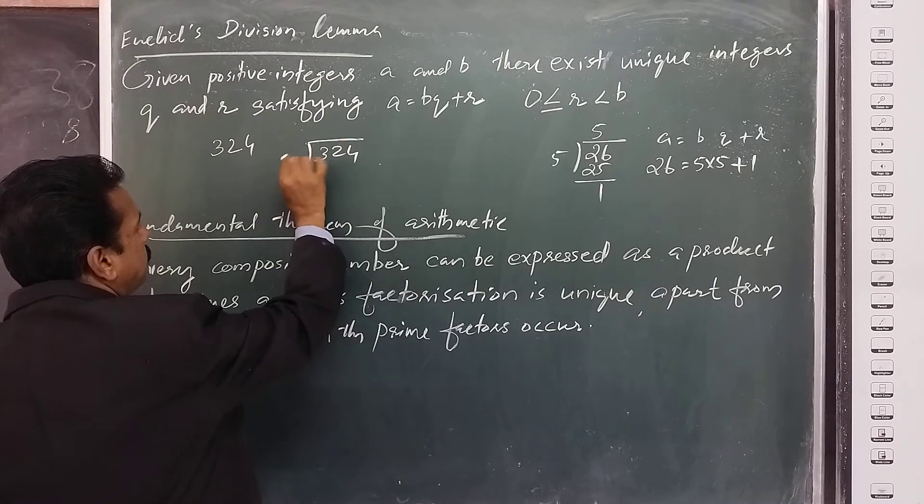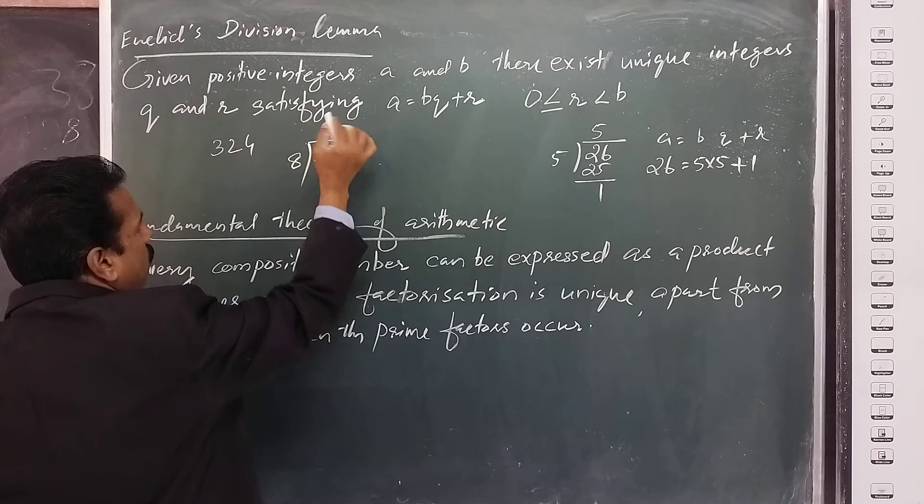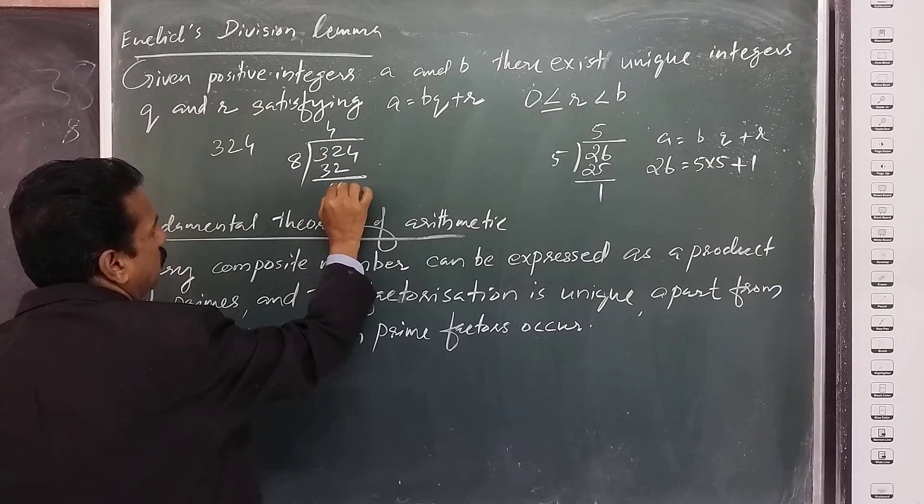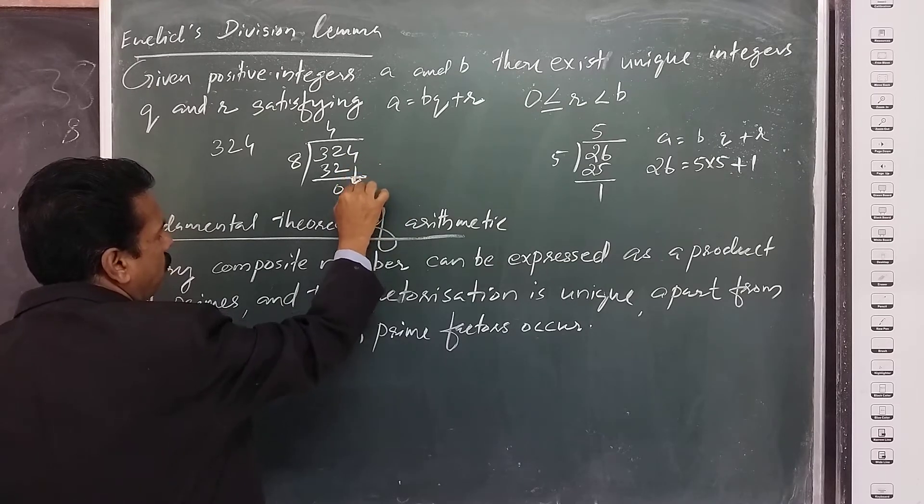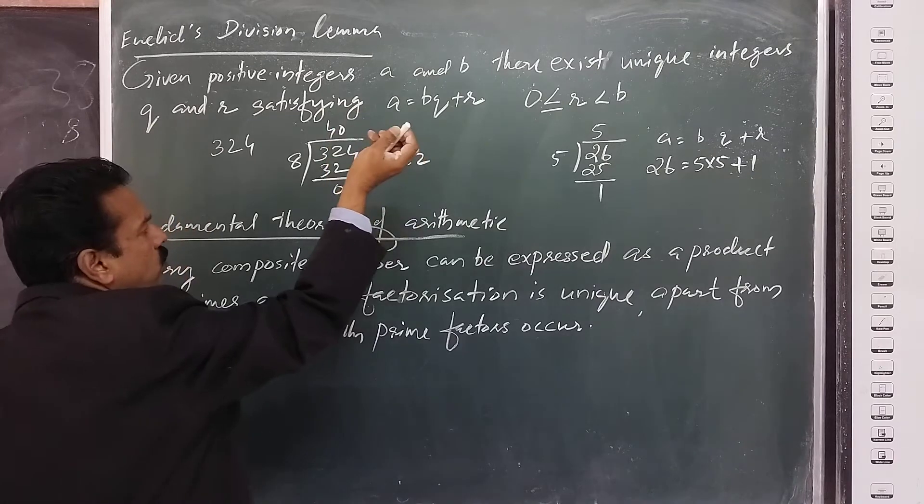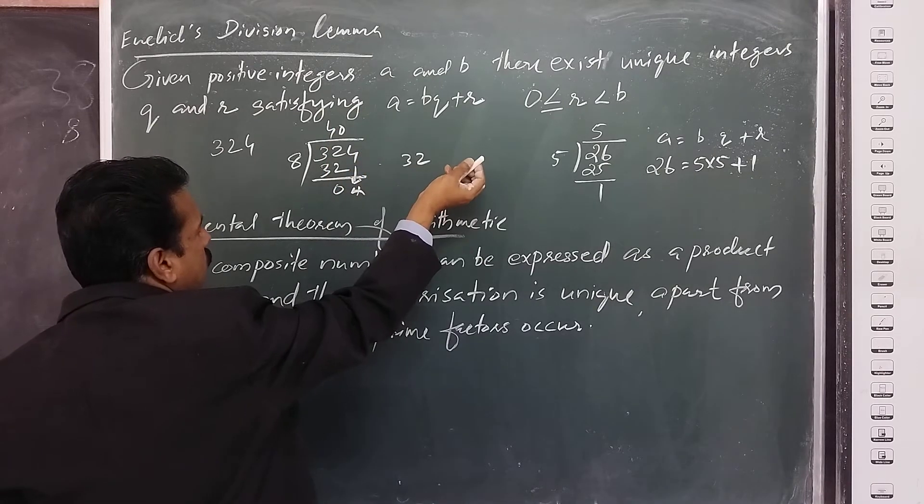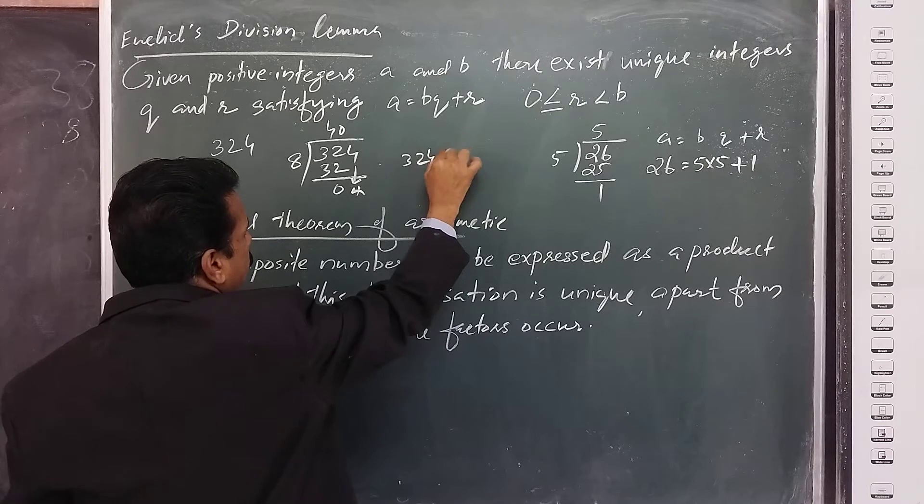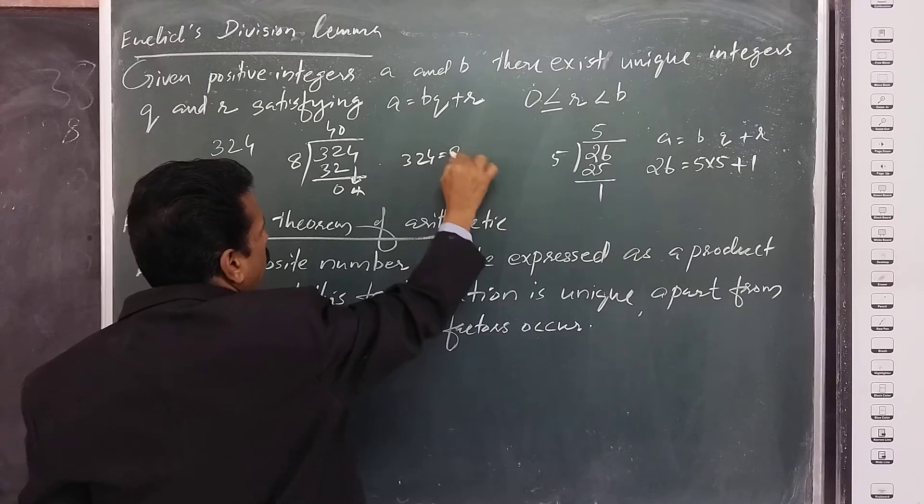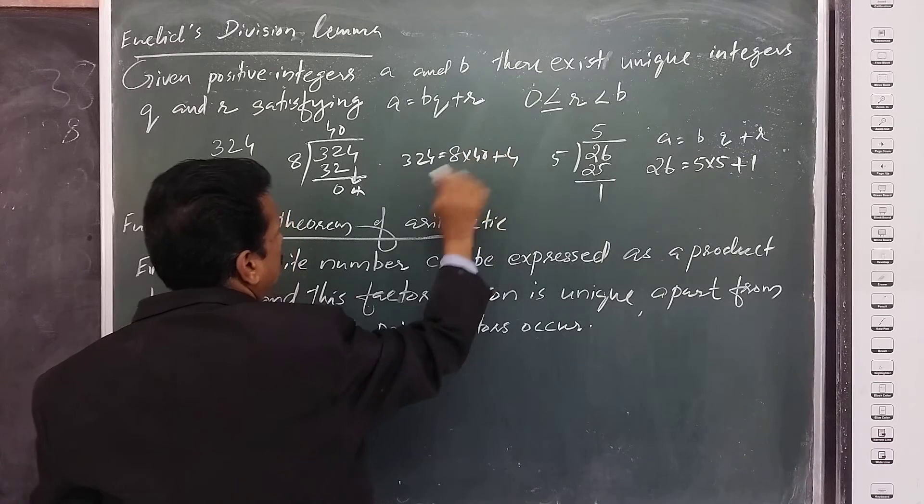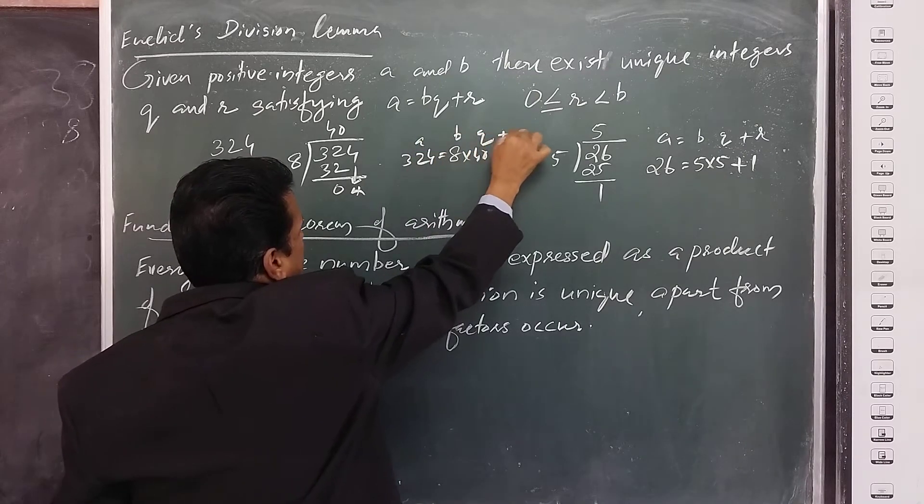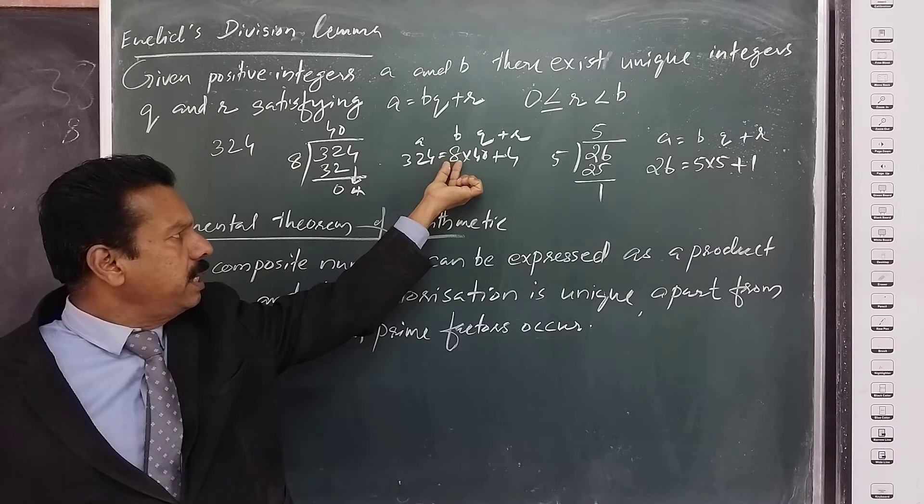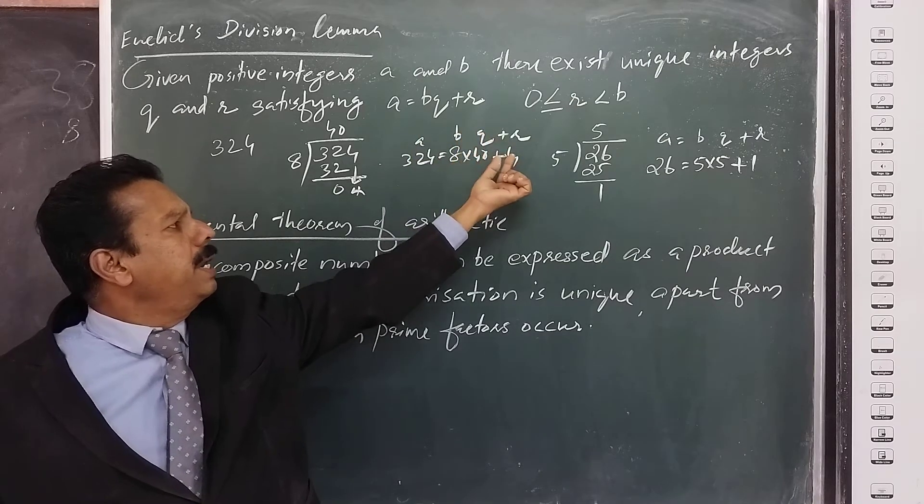Another example is 324. 324 divided by 8 equals 40 with remainder 4. Then 324 is equal to 8 into 40 plus 4. A is equal to BQ plus R. Here the positive integer is 324, the divisor is 8, the quotient is 40, and the remainder is 4.